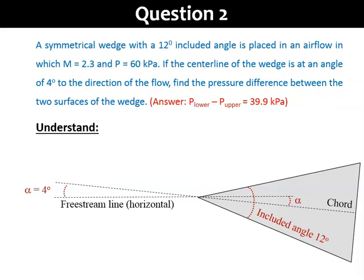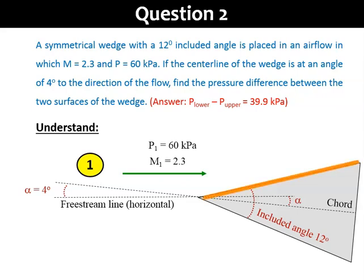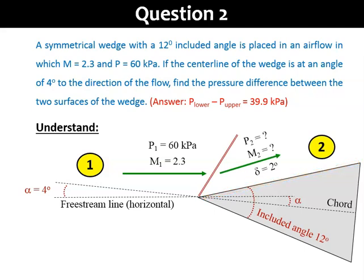I would advise that we draw the freestream to be horizontal, and then draw the wedge at the inclined position relative to the freestream. Looking at the diagram, we have the flow passing over the top surface. Because of the inclined surface, the flow will be deflected in region 2, after crossing an oblique shock wave. From the geometry, we'll get the deflection angle to be 2 degrees.